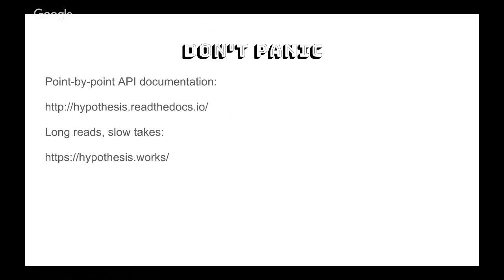I'm going to talk about a part of Hypothesis that maybe you haven't heard about before. Most people talk about the data generation stuff. Hypothesis can be really opaque — it's hard to get into. The API documentation is great if you're already of the mind that it's going to help you write your tests, but it doesn't provide a coherent narrative to a newcomer. The author David McIver has another website, Hypothesis.Works, with long reads that walk you through step by step. But the problem is you have to understand the example code first, which is a big context switch.